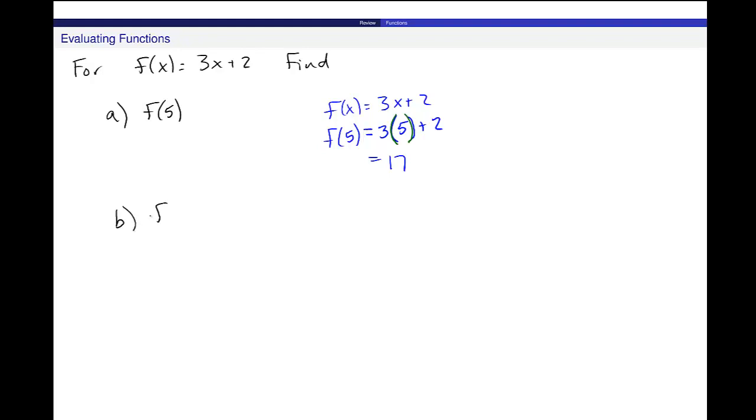So, b, I want to find f of negative x. Same exact thing. I want to start with my original function, 3x plus 2. And now, in this line, everywhere I see x, I'm going to plug in negative x in parentheses. So, I get negative 3x plus 2. Simplify. So, f of negative x is equal to negative 3x plus 2.